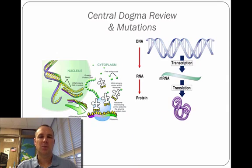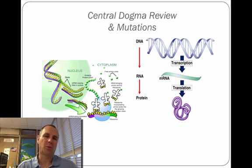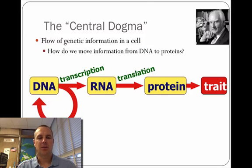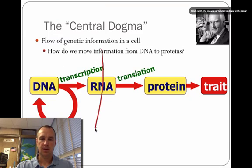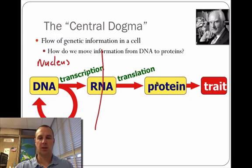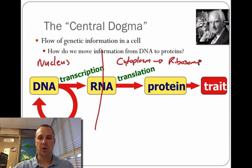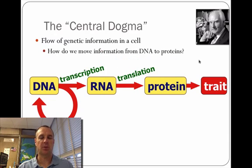Hey guys, Mr. Kennedy back. I just wanted to summarize the central dogma for you and go over a few more points and talk about mutations. Just remember what the central dogma is: we go from DNA through transcription and change it to RNA — both happen inside the nucleus. Then mRNA leaves the nucleus, goes into the cytoplasm to the ribosome, where RNA is translated into a protein which eventually becomes a trait. That is the central dogma in a nutshell.